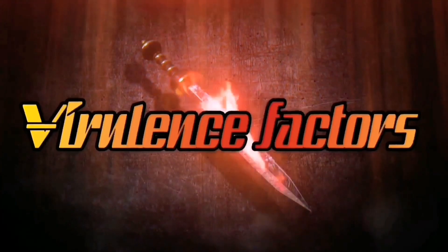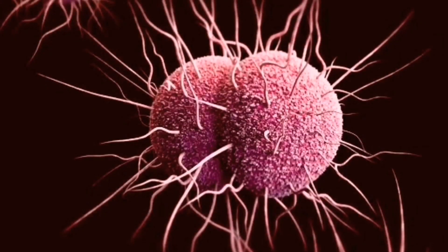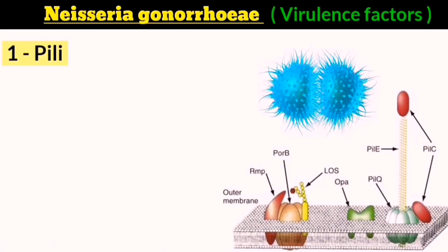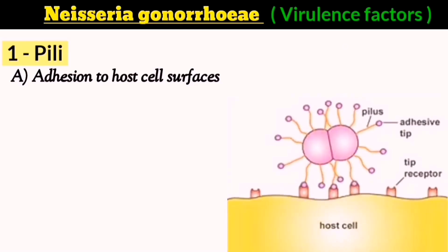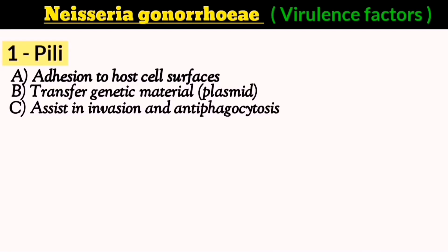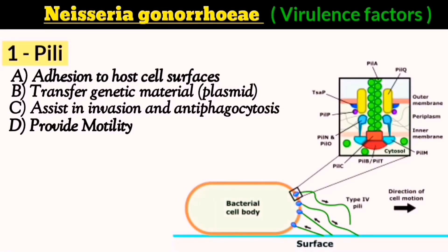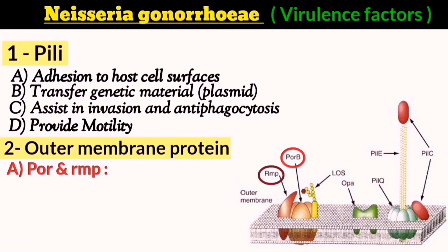The virulence factors of N. gonorrhea are characterised by their ability to aid bacterial attachment to inner genital organs. Pili are small appendages on the outer surface of gonococci that play an important role in adhesion to host cells, help transfer genetic material like plasmids to other species, aid in invasion, have antiphagocytic properties, and provide some motility towards certain receptors. Gonococci also have outer membrane proteins such as porin proteins and reduction-modifiable protein, which extend from the plasma membrane and form channels to transfer nutrients into the bacterial cell.